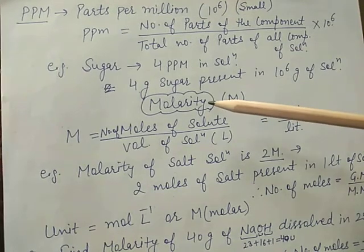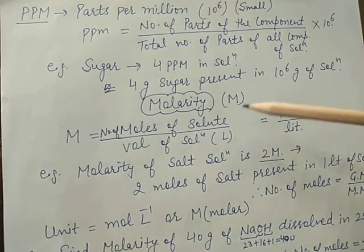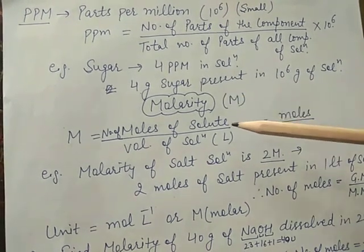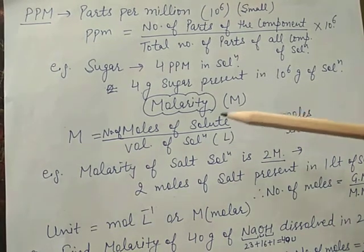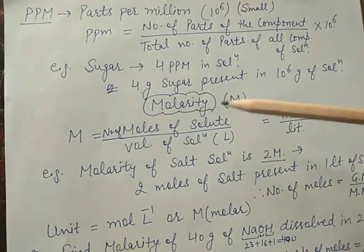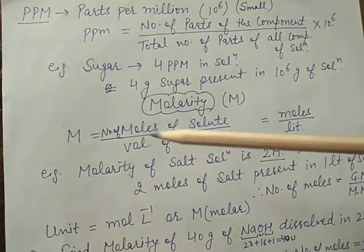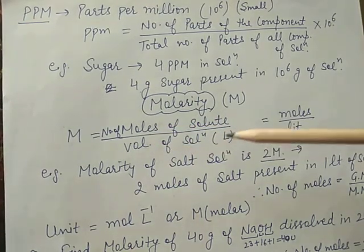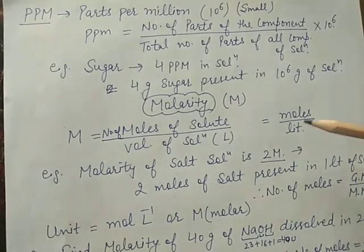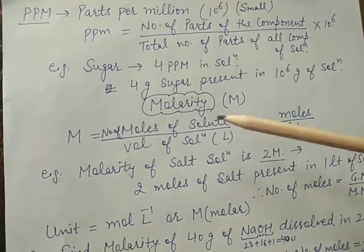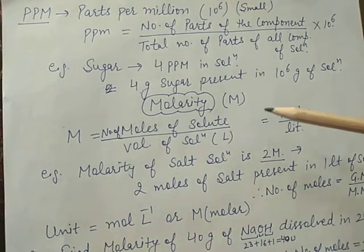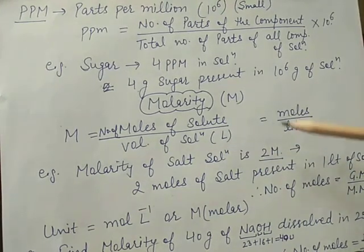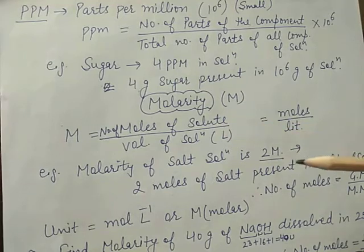Next topic is molarity, denoted by capital M. Molarity equals the number of moles of solute dissolved in one liter of solution. The formula is: molarity = number of moles of solute divided by volume of solution in liters. Its unit is moles per liter, also written as capital M (molar). Number of moles is calculated as given mass divided by molar mass.